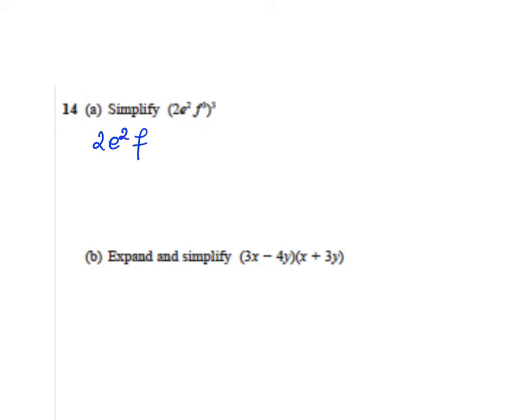We have (2e²f³)³. The brackets suggest that every factor inside is raised to the power of 3. So that's going to be 2³, e² to the power of 3, and f³ to the power of 3, which equals 8e⁶f⁹.